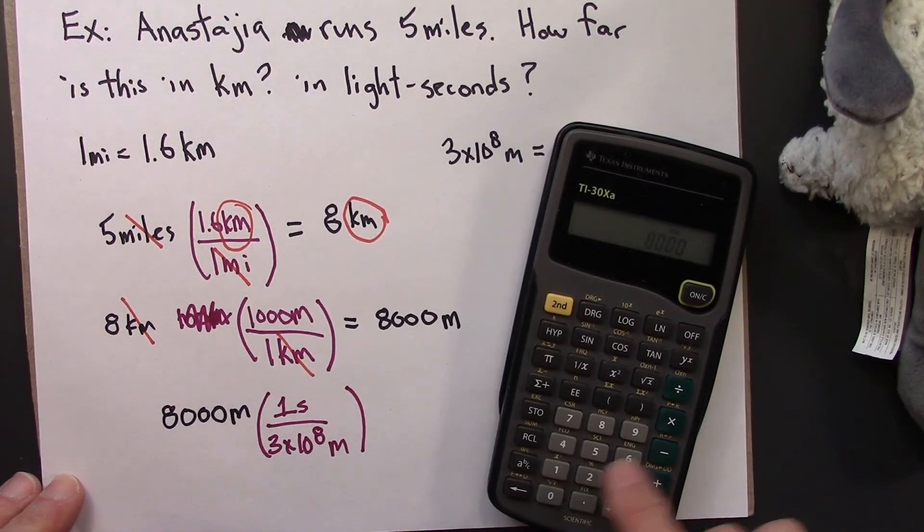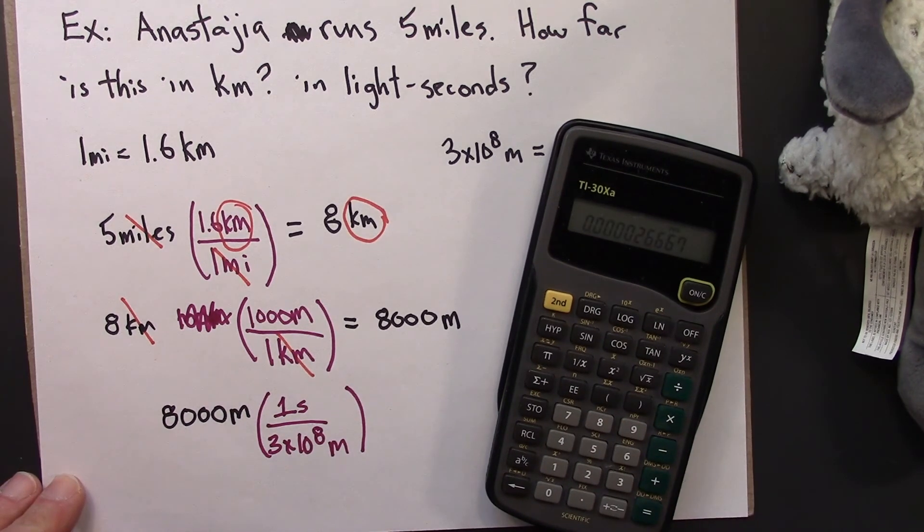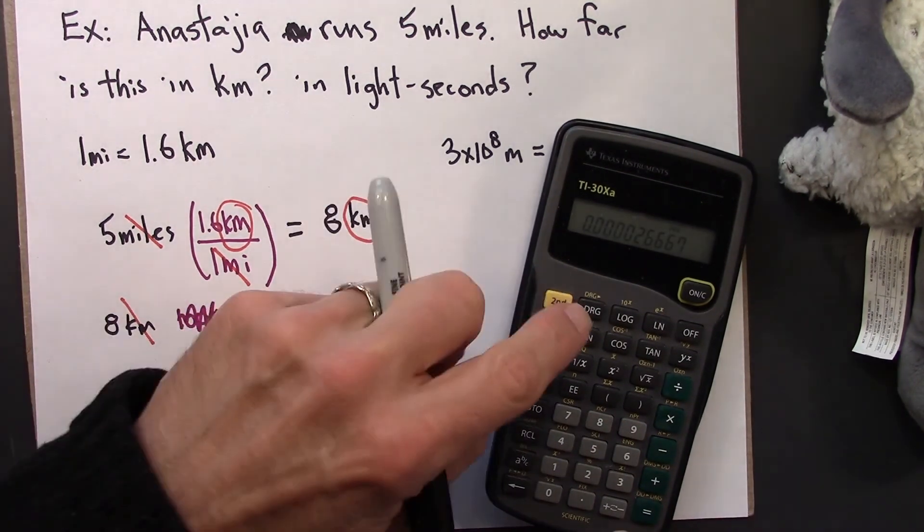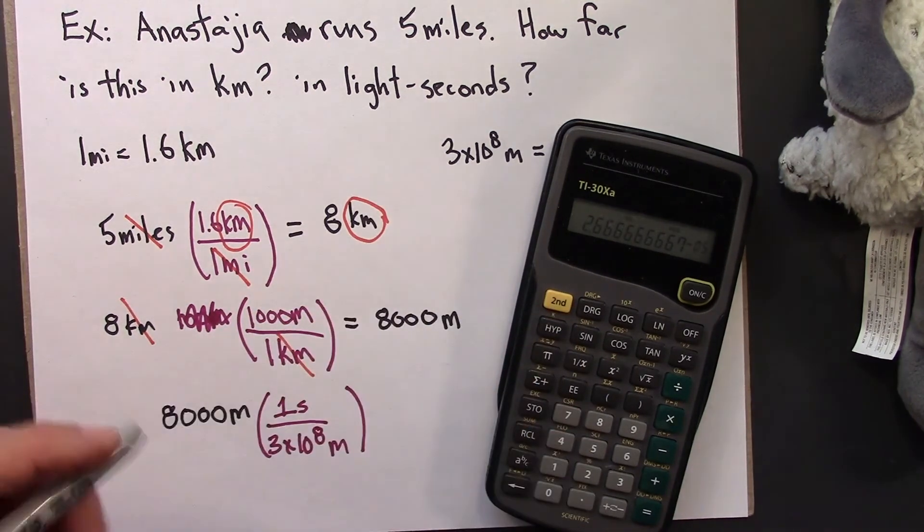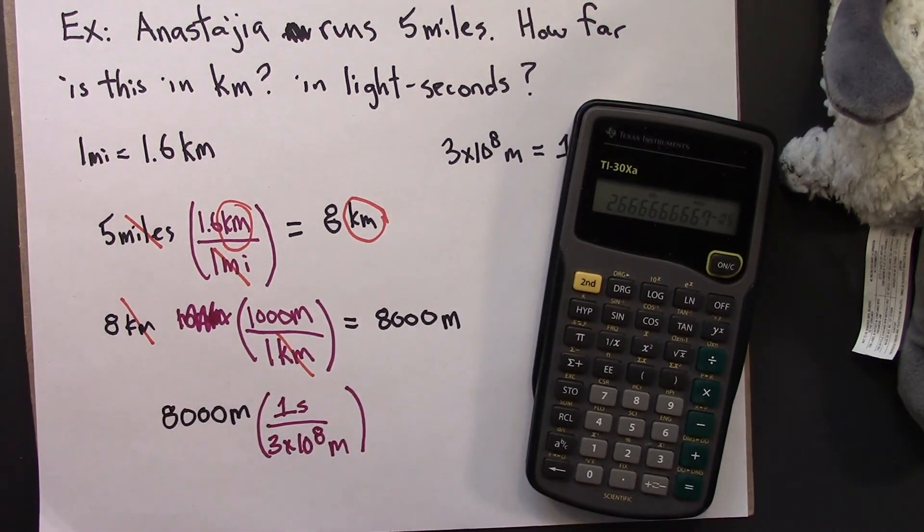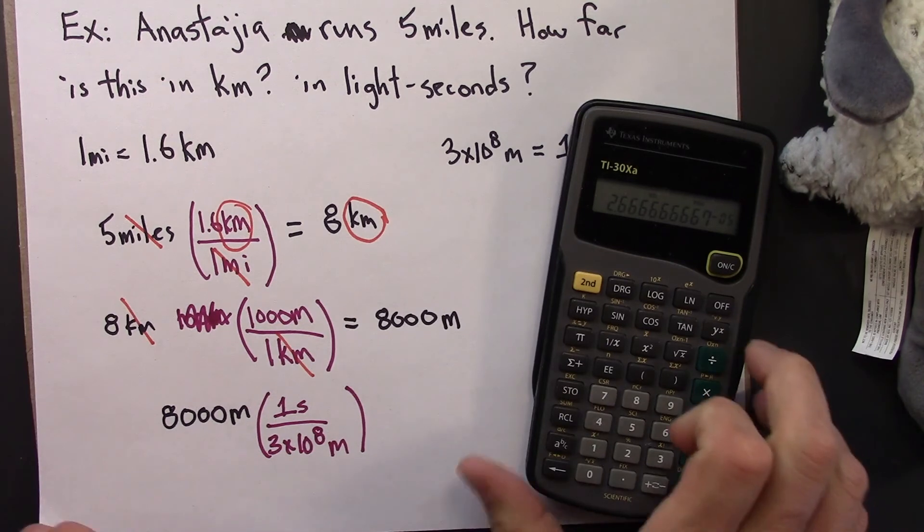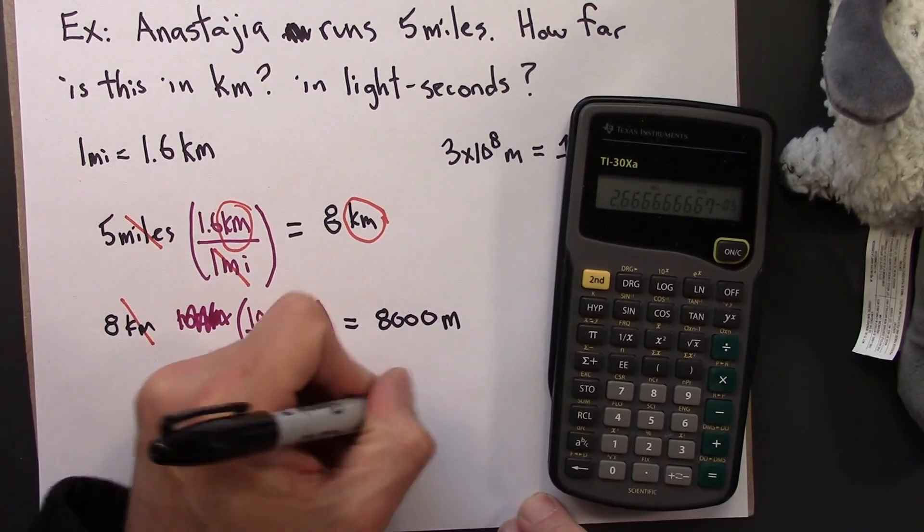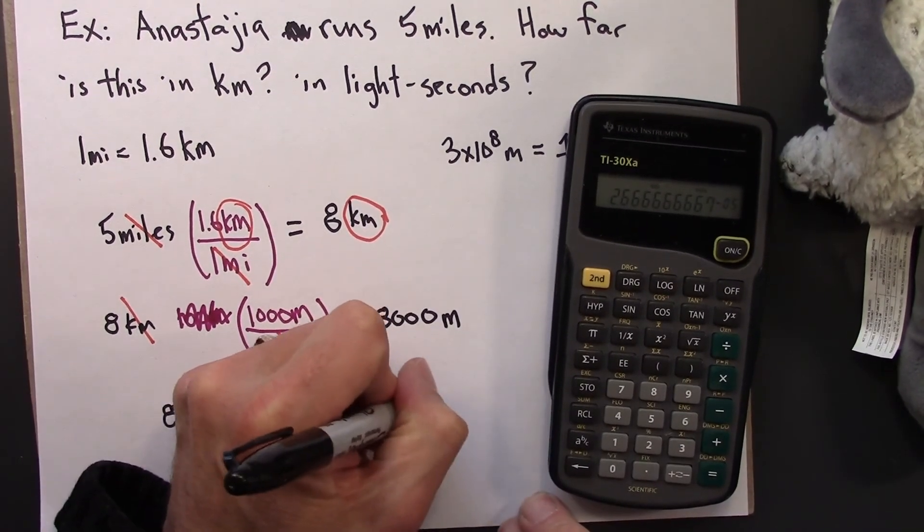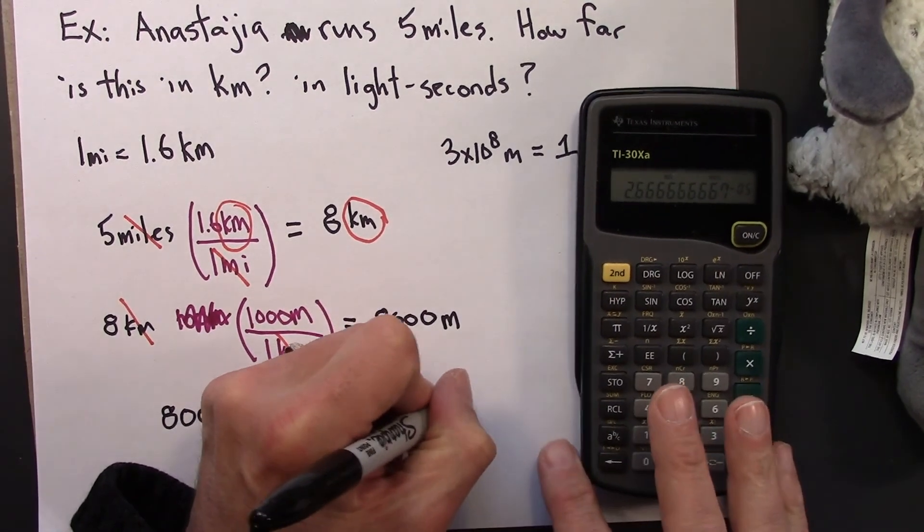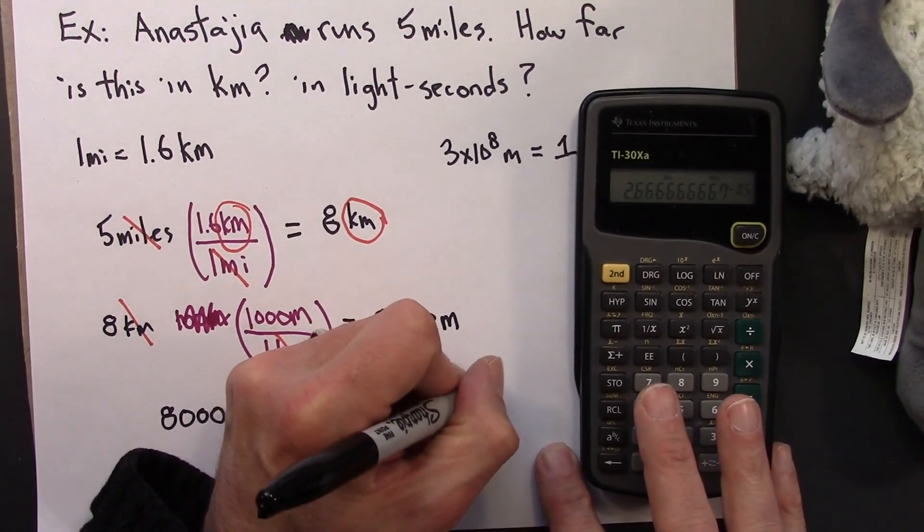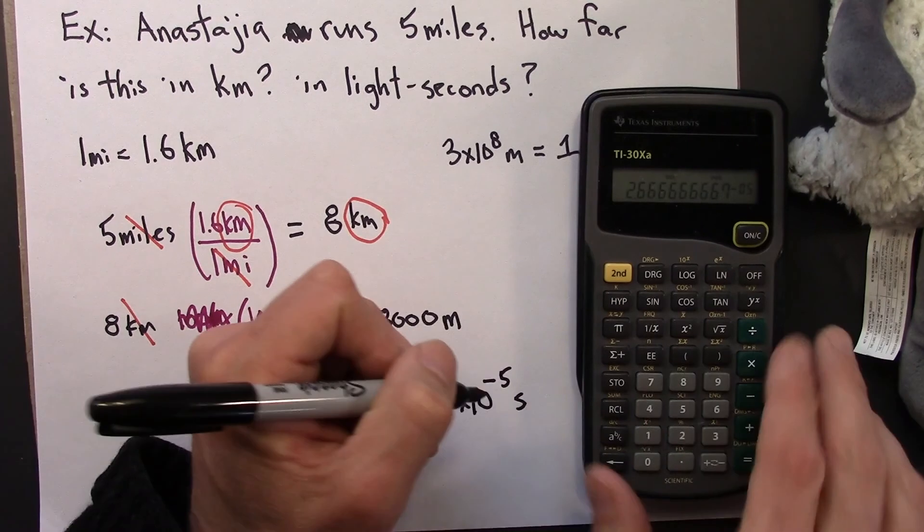So 8,000 divided by 3 times 10 to the 8th, gives me 0.0000 whatever. Let's convert into scientific notation. And I have 2.67 times 10 to the minus 5 seconds.